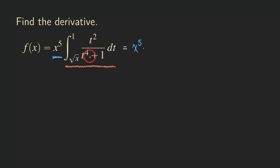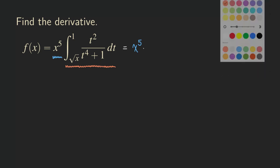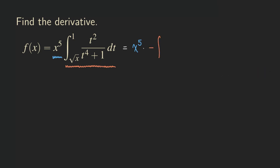Because of that, this integral function is going to be continuous and differentiable. So in that case, we can apply FTC Part 1 to differentiate this function. But we also need to make sure that the variable is in the upper limit, and that's not the case here. So we need to switch them. All we need to do is negate the integral — put a minus sign in front — and then switch the limits: one goes to the lower limit, and square root of x is now in the upper limit.